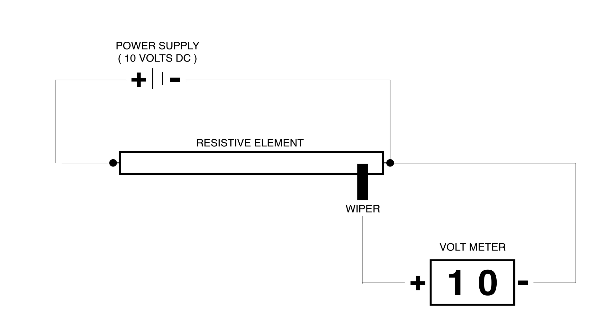The full-scale output voltage is equivalent to the excitation voltage. For example, an excitation voltage of 10 volts DC would produce an output of 0 to 10 volts DC.